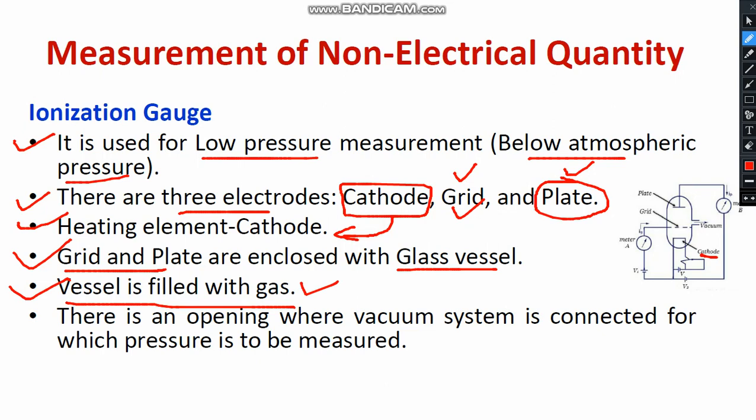The glass vessel is filled with a particular gas, which prevents oxidation. There is an opening in the glass vessel where the vacuum system is connected — this is the point at which the pressure is to be measured. You can see this opening in the diagram.